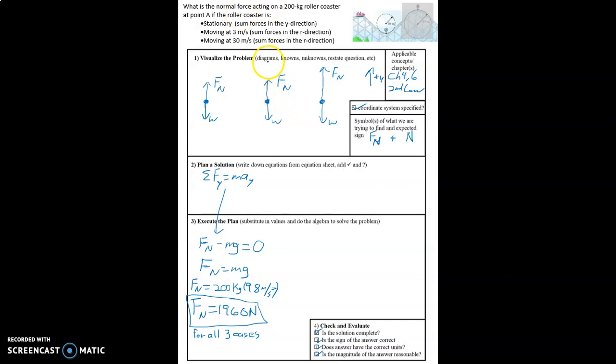To help us with that, anytime you have something moving in a curved path, you should identify an R direction. And the roller coaster is here and the center of the circle is there, so the R direction is upward, and that's the case for both of these, the second and third cases here.